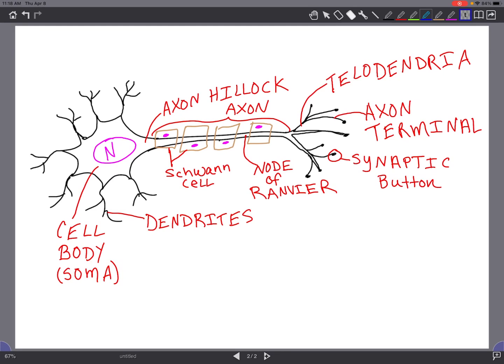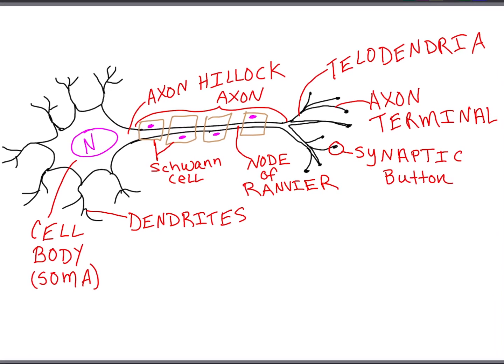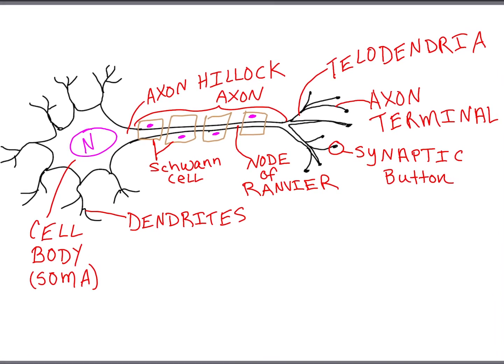Neurons are electrically excitable cells capable of sensing, thinking, remembering, and controlling the body by responding to stimuli — any change in the environment that stimulates an action potential. An action potential, also known as a nerve impulse, is an electrical signal that propagates along the surface of the membrane of the neuron.